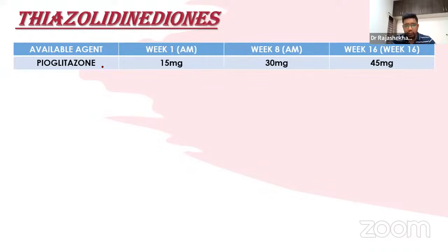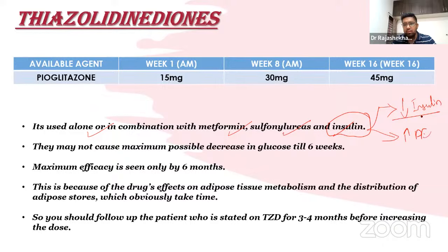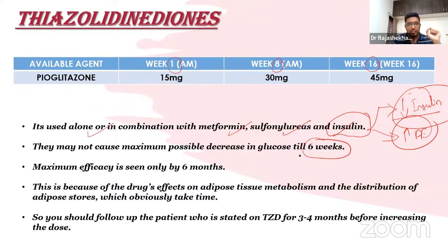Dosing: start at 15 mg, titrate up to 30 mg, with a maximum of 45 mg. The drug can be used alone or combined with metformin, sulfonylurea, or insulin. When combined with insulin, it reduces insulin dosage but increases the risk of peripheral edema. Importantly, TZDs take at least 6 weeks for initial effect and up to 6 months for maximum effect due to the time needed for adipose tissue redistribution — wait at least 3–4 months before adjusting dose.